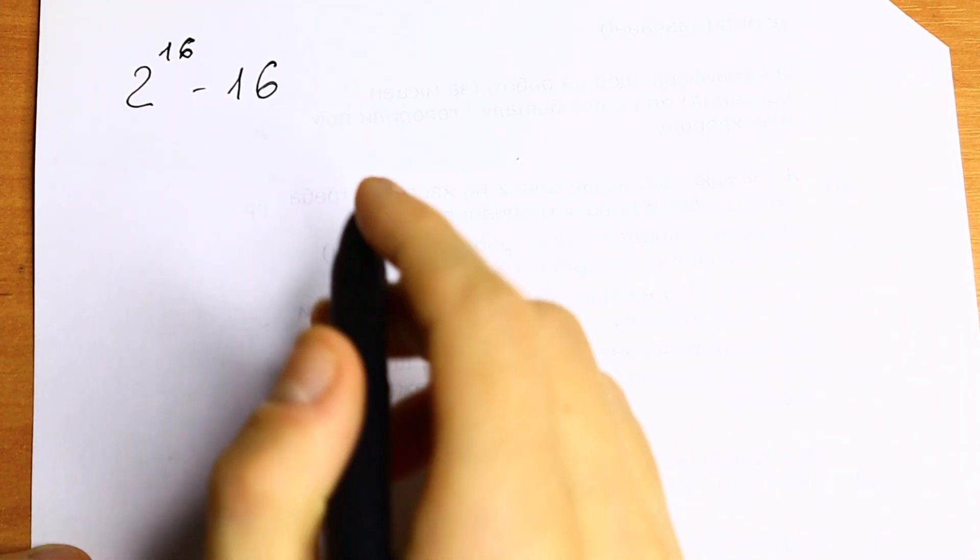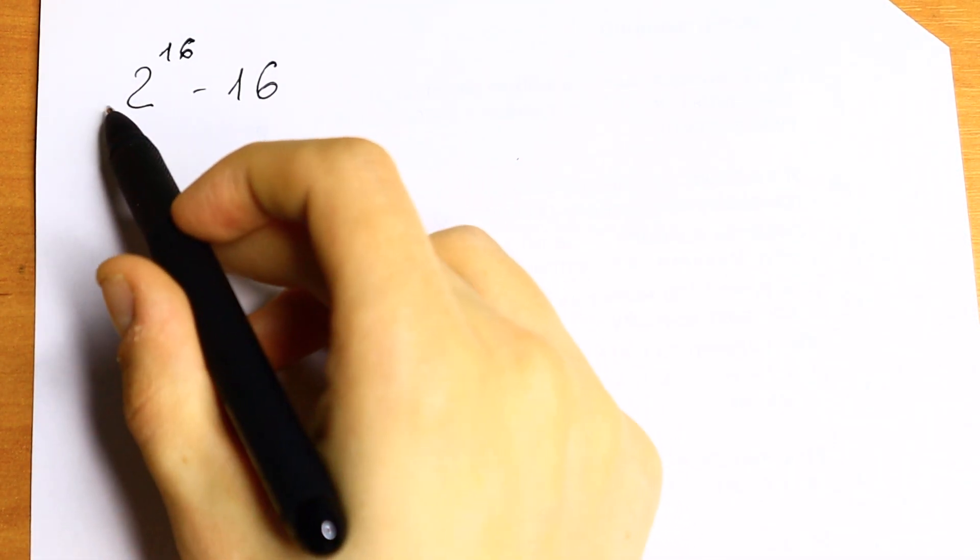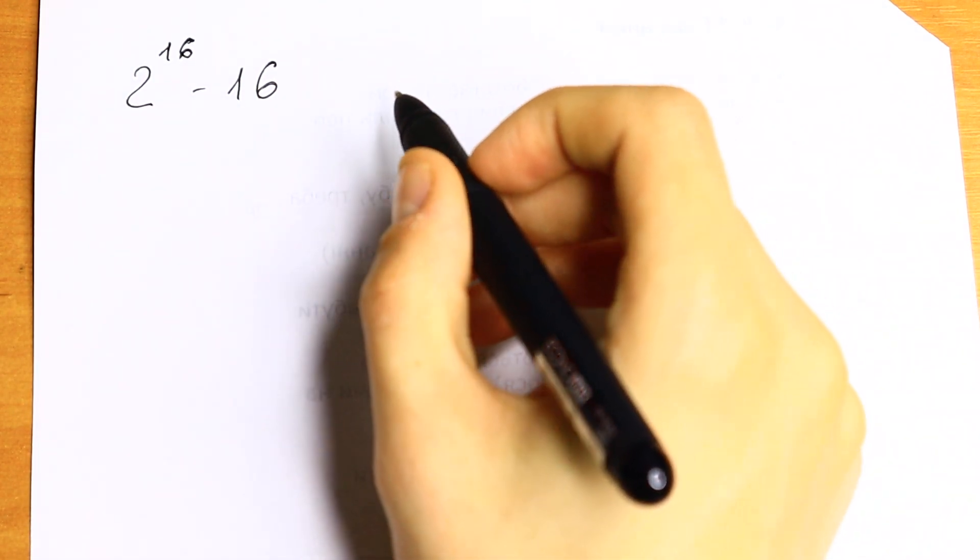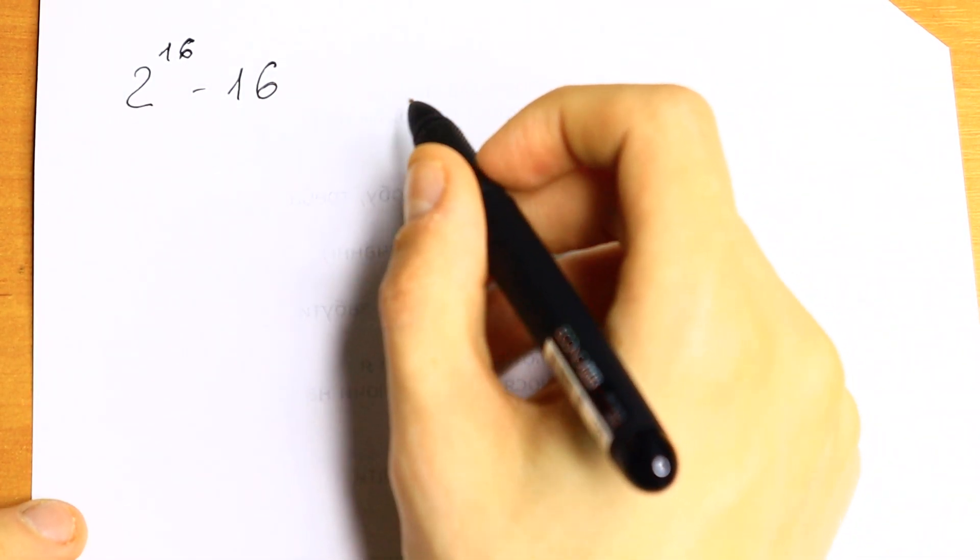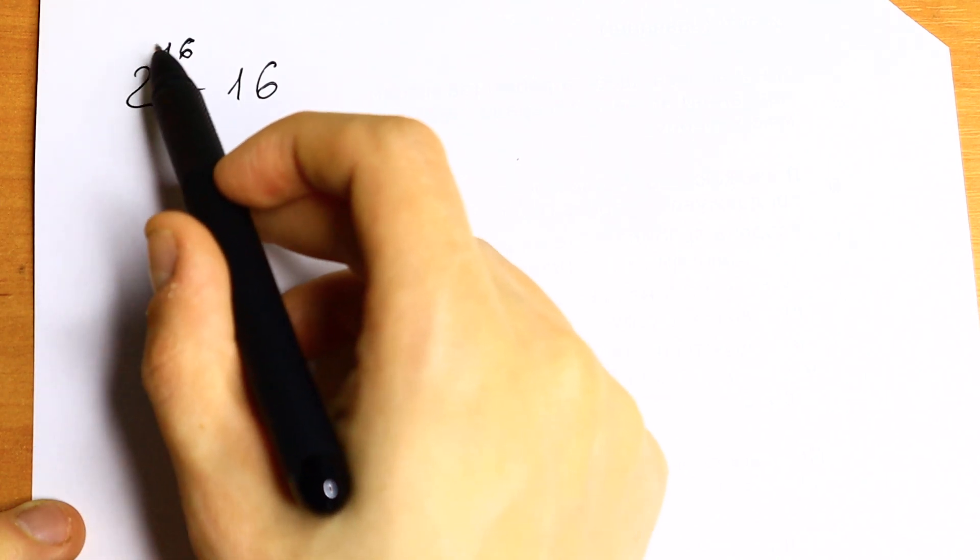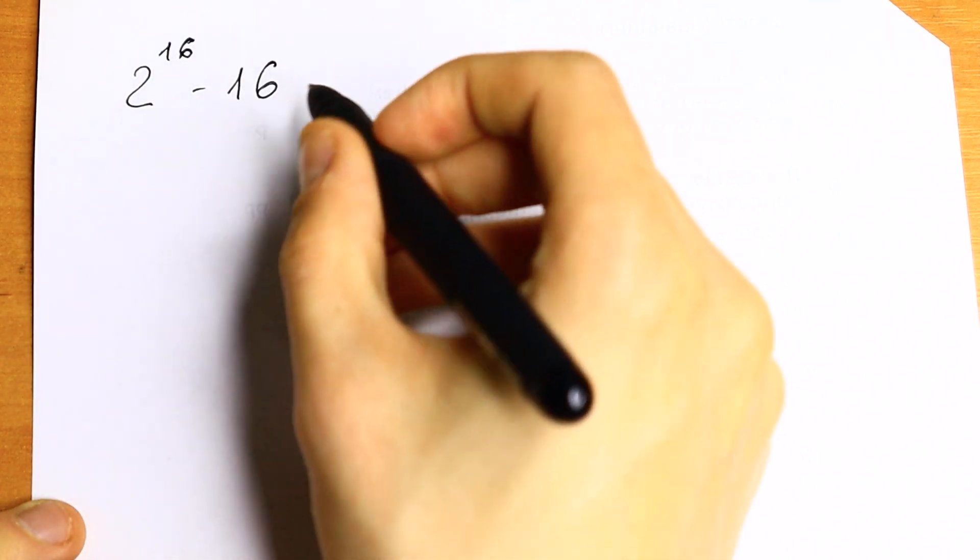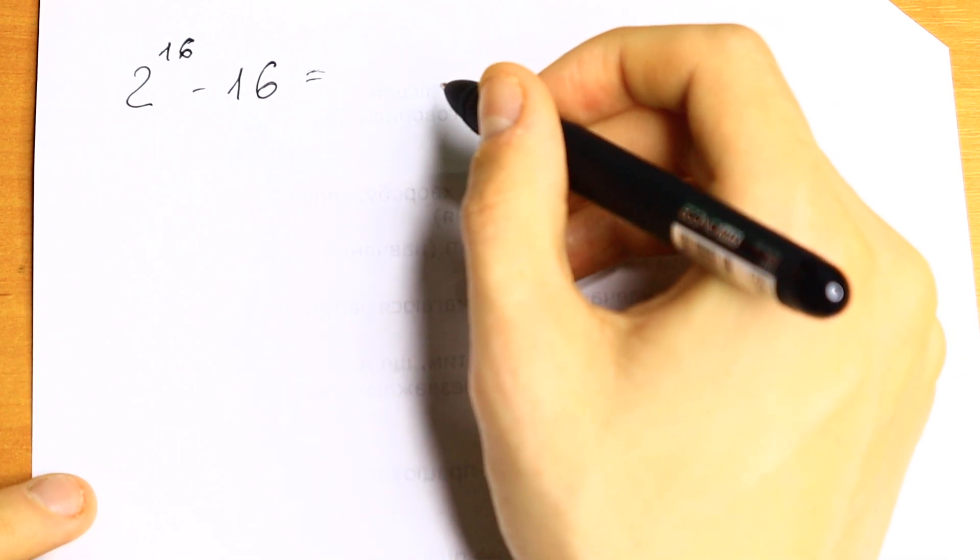Hello everyone, welcome back to Mathmoon. Today we have an interesting algebra problem: 2 to the 16th power minus 16. The first way is to find 2 to the 16th power, but I want to show you a really good method. How can we solve it faster?